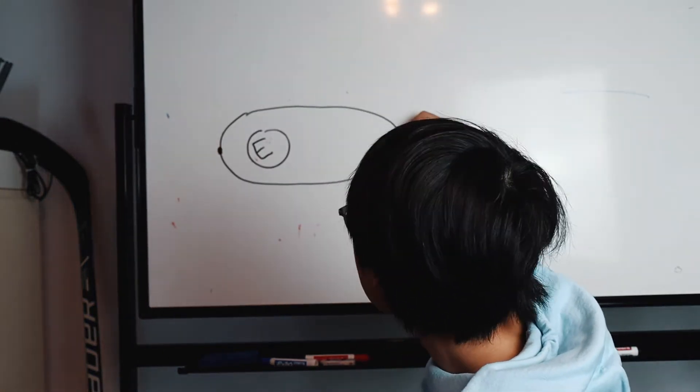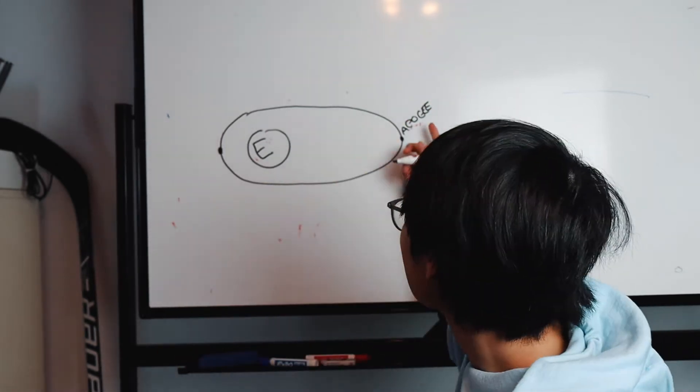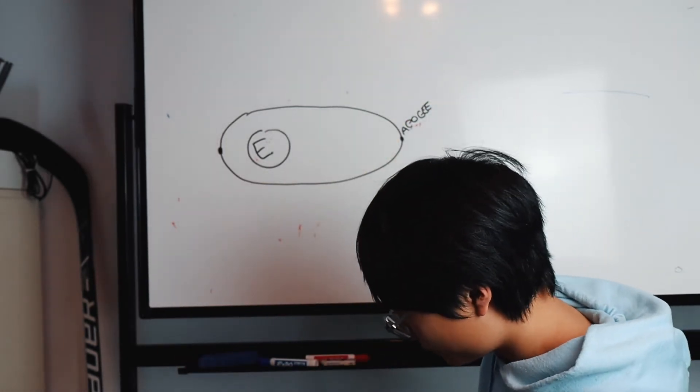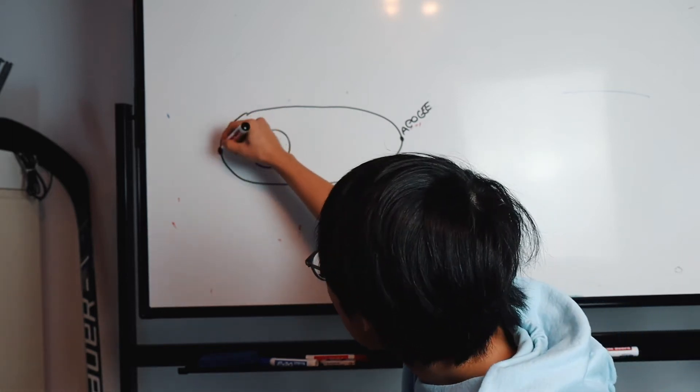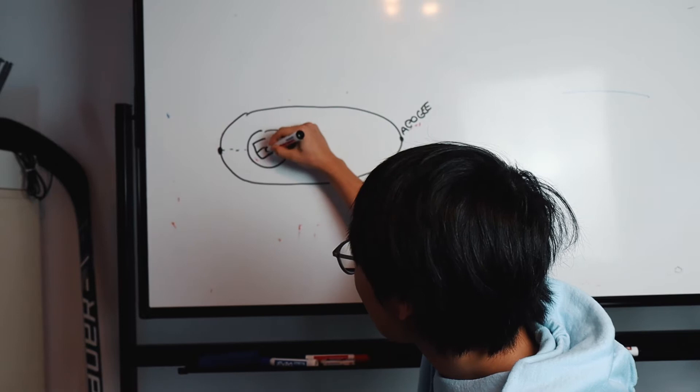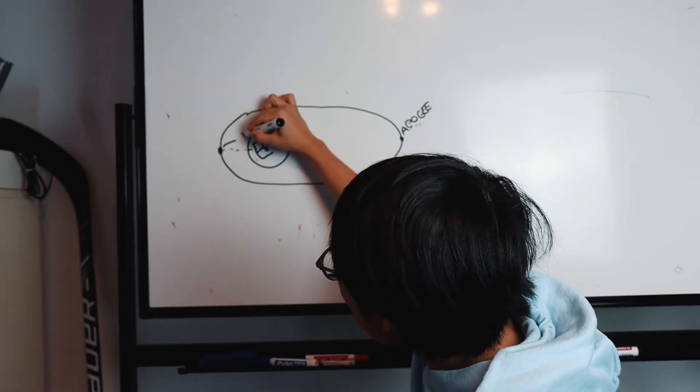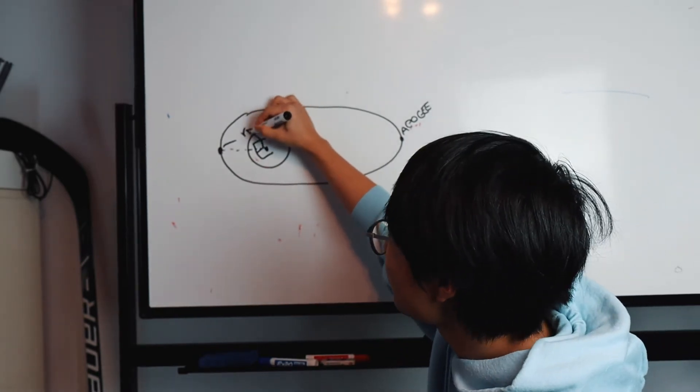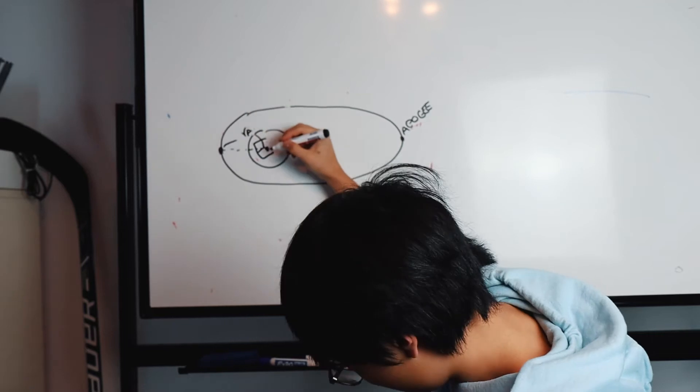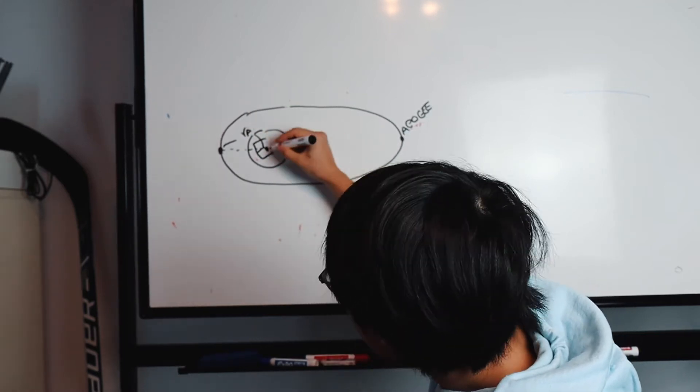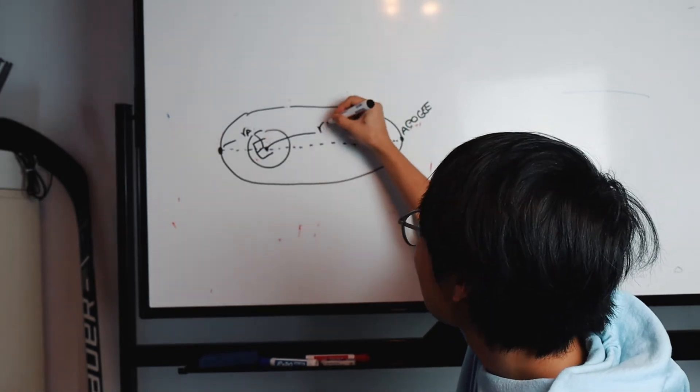There's the lowest point and the highest point, which is also called apogee. From the center of the Earth, we're going to call this distance radius A. And there's also radius B, which is the distance between the apogee and the center of the Earth.